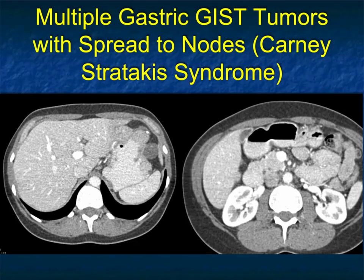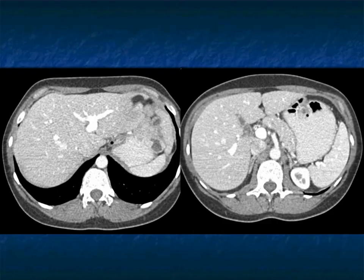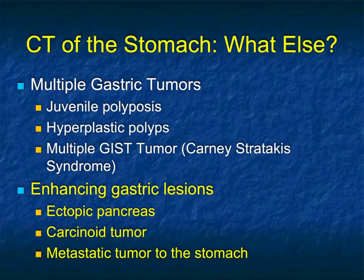Here are just a few more images of that patient. Not surprisingly, this patient underwent a gastrectomy. Multiple polypoid lesions, mainly off-the-wall exophytic — you've got to think about multiple GIST tumors.